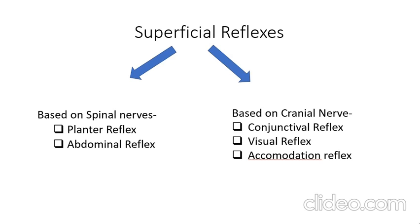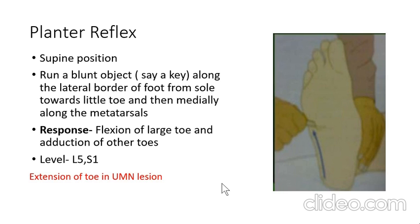Superficial reflexes are of two types based on spinal nerve and cranial nerve. Based on spinal nerve: plantar reflex and abdominal reflex. Based on cranial nerve: conjunctival reflex, visual reflex, and accommodation reflex.